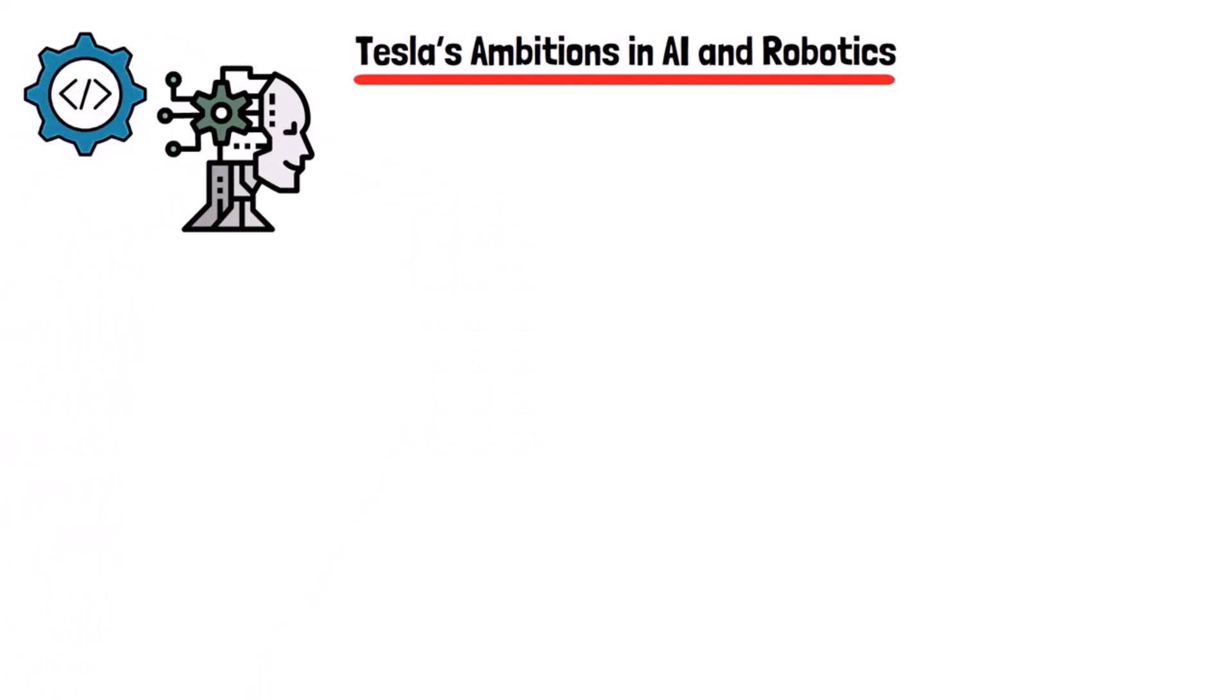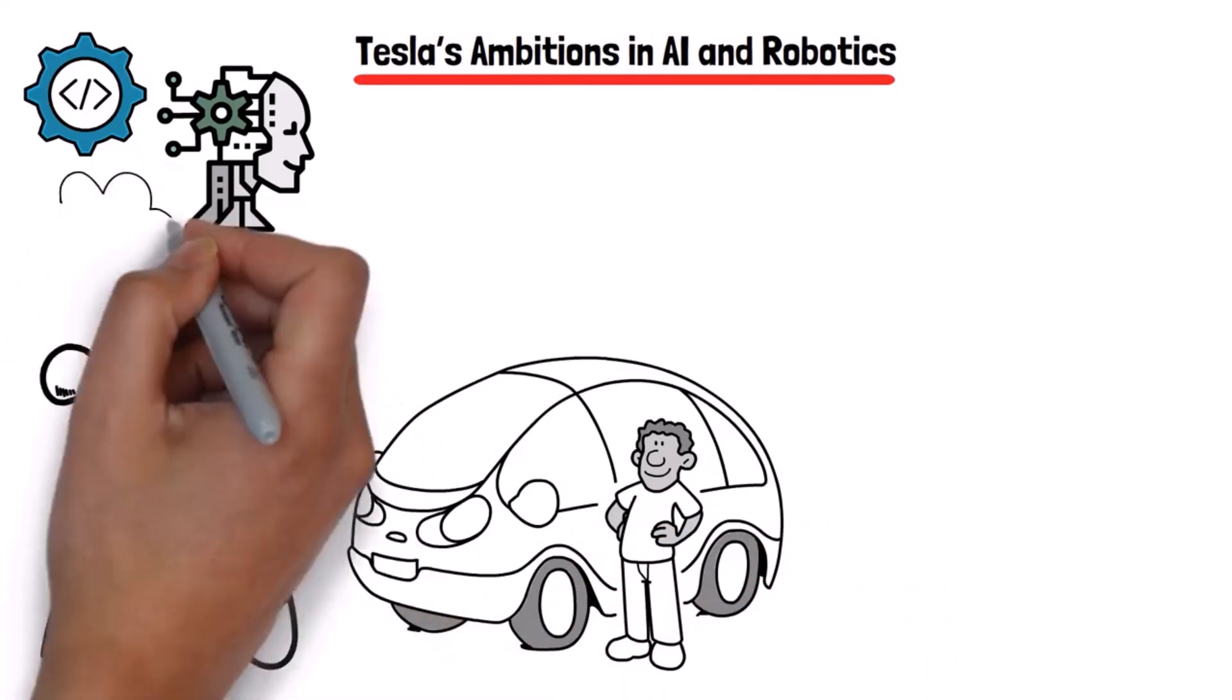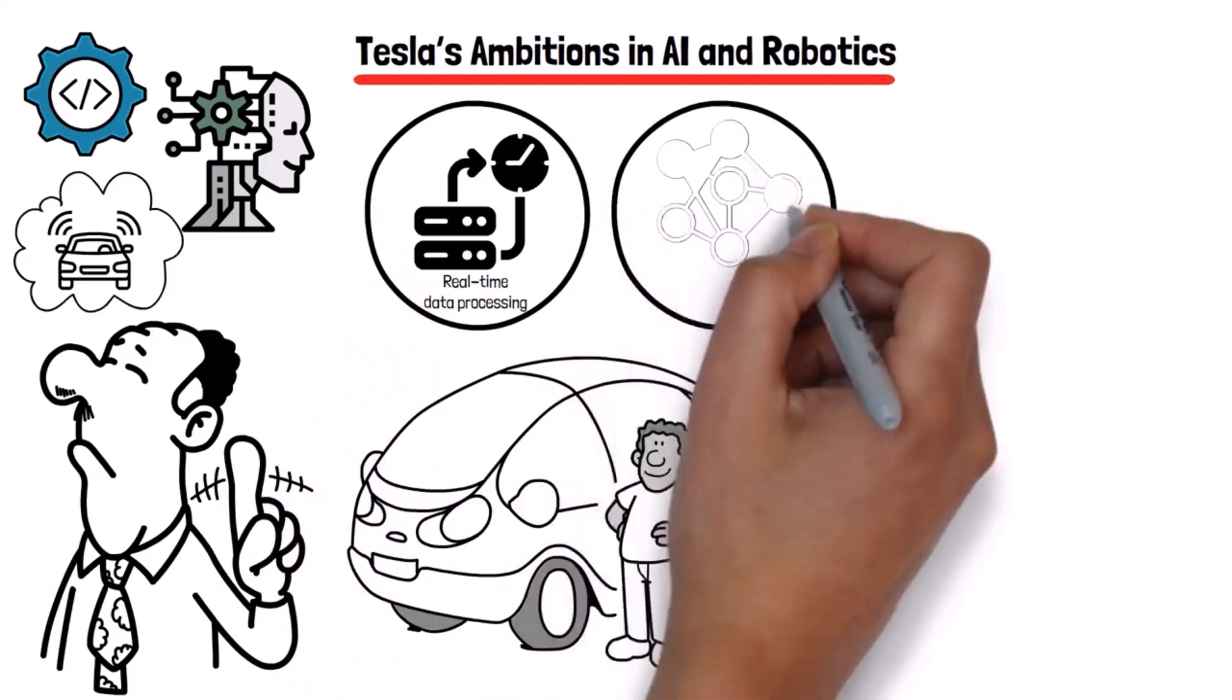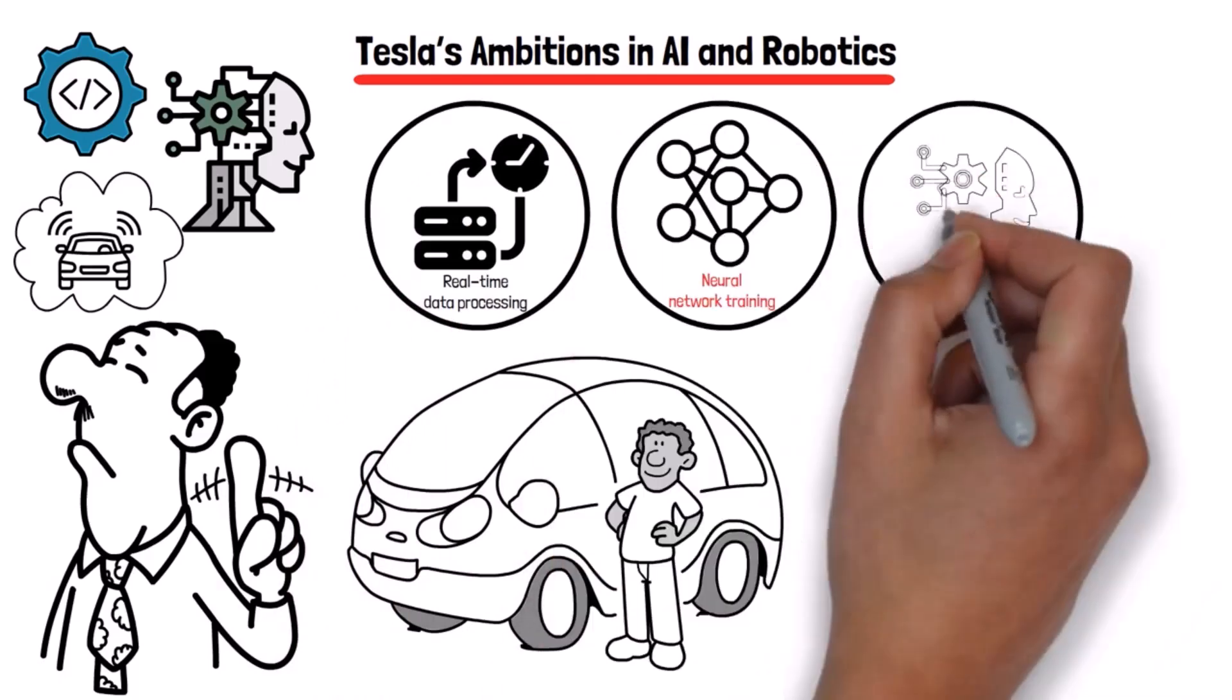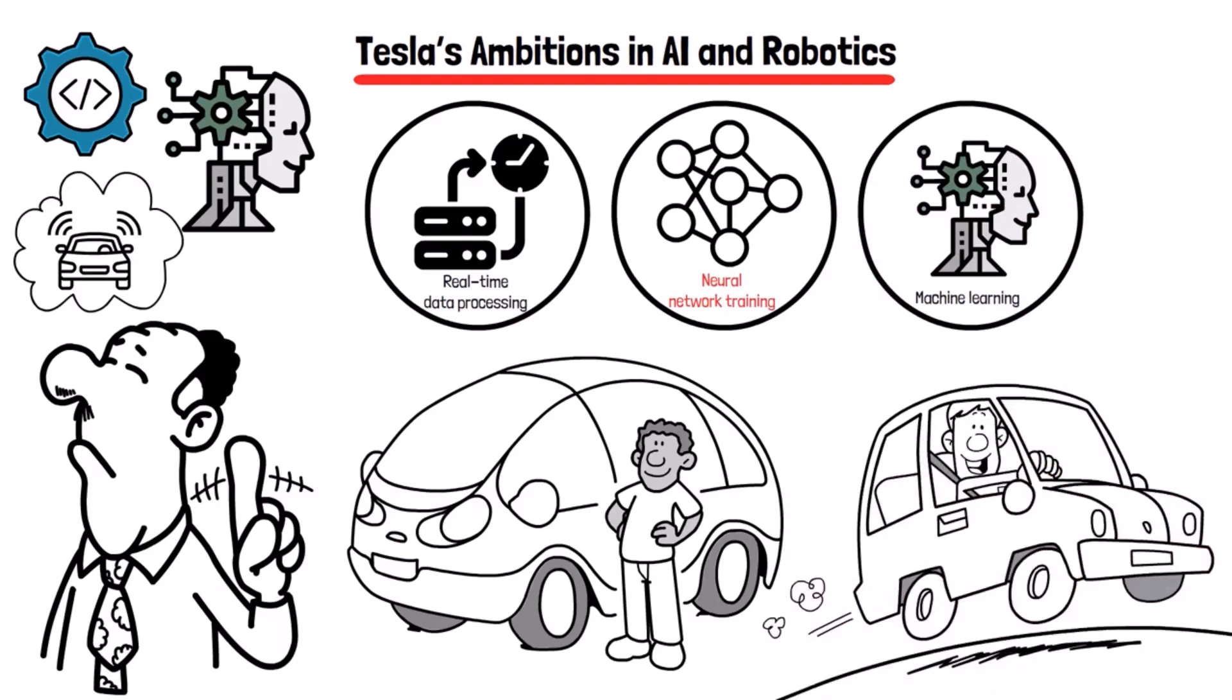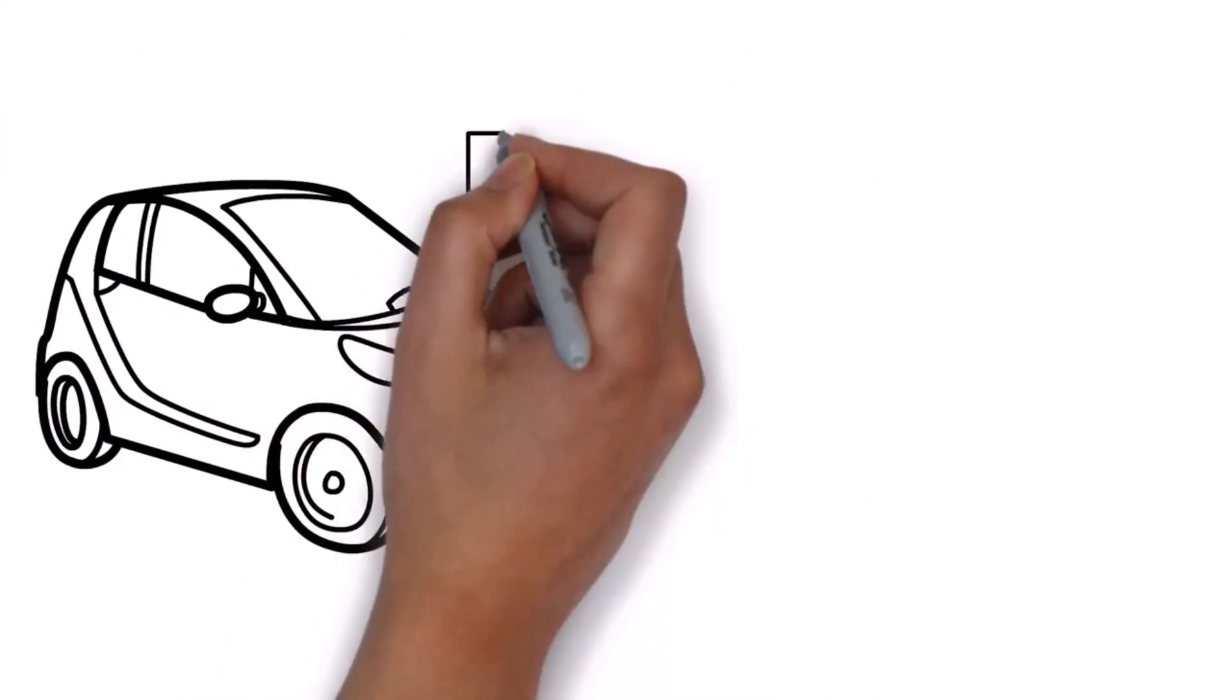Tesla's ambitions in AI and robotics. Let's talk more about Tesla's AI and robotics ventures. Tesla's self-driving technology is among the most advanced in the industry. They're not just working on making cars autonomous, they're developing an entire ecosystem that includes real-time data processing, neural network training, and machine learning. This could revolutionize transportation, making it safer and more efficient.